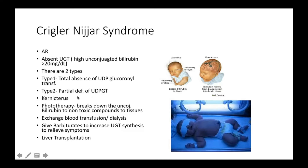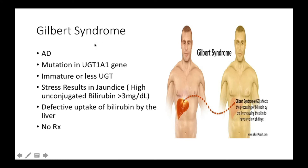Patients with Crigler-Najjar syndrome may present with kernicterus. With kernicterus, bilirubin moves from the bloodstream into the brain tissue. Treatment options for Crigler-Najjar syndrome can include phototherapy, exchange blood transfusion or dialysis, giving of barbiturates — which are going to increase the UGT synthesis to relieve symptoms — or in other cases, liver transplantation is preferred.